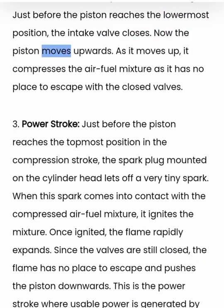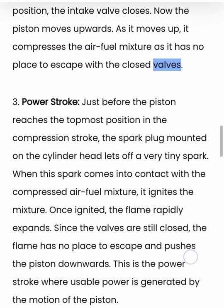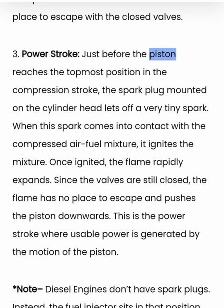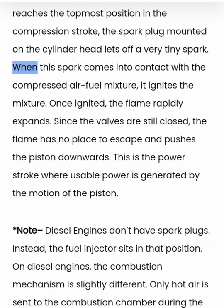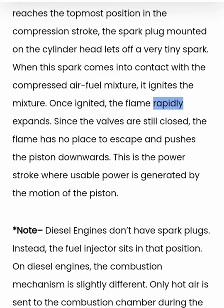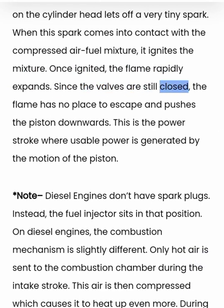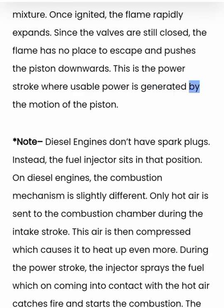Now the piston moves upwards. As it moves up, it compresses the air-fuel mixture as it has no place to escape with the closed valves. Power stroke: just before the piston reaches the topmost position in the compression stroke, the spark plug mounted on the cylinder head lets off a very tiny spark. When this spark comes into contact with the compressed air-fuel mixture, it ignites the mixture. Once ignited, the flame rapidly expands. Since the valves are still closed, the flame has no place to escape and pushes the piston downwards. This is the power stroke where usable power is generated by the motion of the piston.